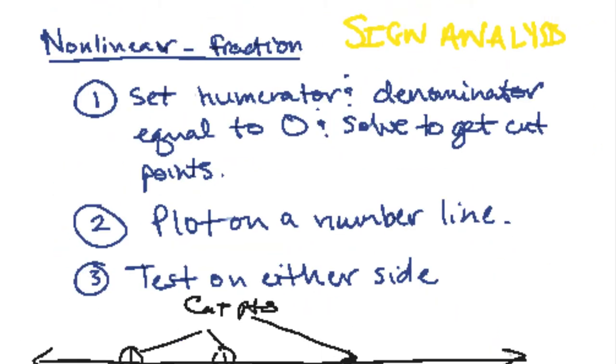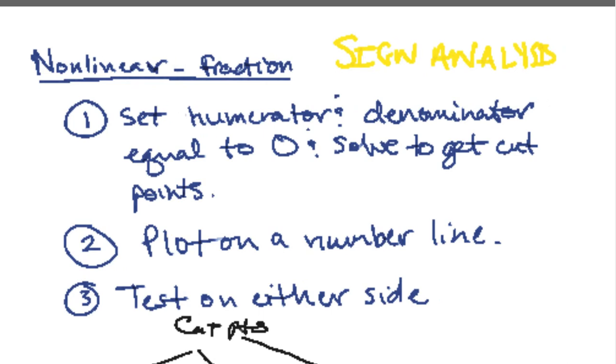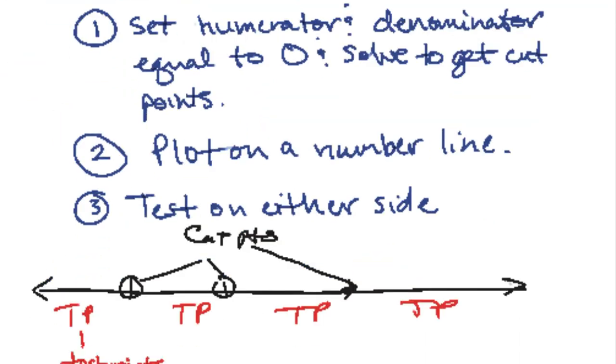So learn these rules for inequalities. They'll show up again when you're being asked domain questions, because for instance, a domain of a radical has to be positive, right? How do we say that mathematically? Greater than 0 or greater than or equal to 0, depending on whether or not it's in the denominator.